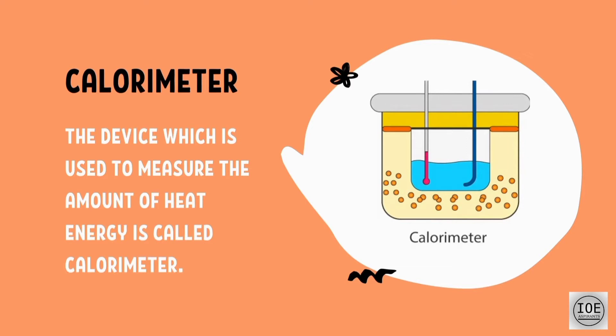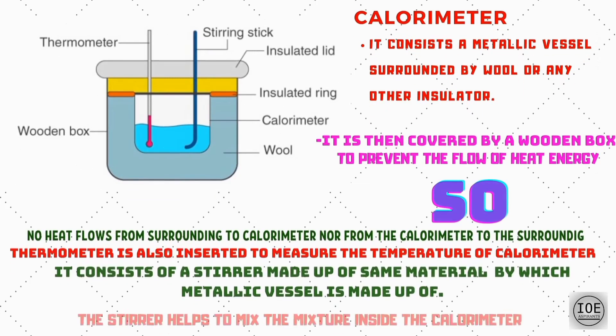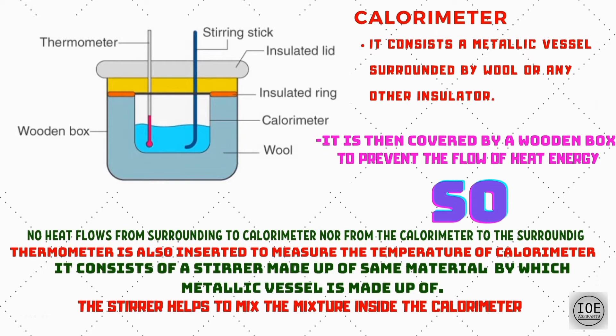The basic structure of the calorimeter is provided here. It consists of a metallic vessel surrounded by wool or any other insulator. Similarly, it is then covered by a wooden box to prevent the flow of heat energy, so no heat flows from the surrounding to the calorimeter, nor from the calorimeter to the surrounding. A thermometer is also inserted to measure the temperature of the calorimeter. It also consists of a stirrer made up of the same material as the metallic vessel, which is used to mix the mixture inside the calorimeter.